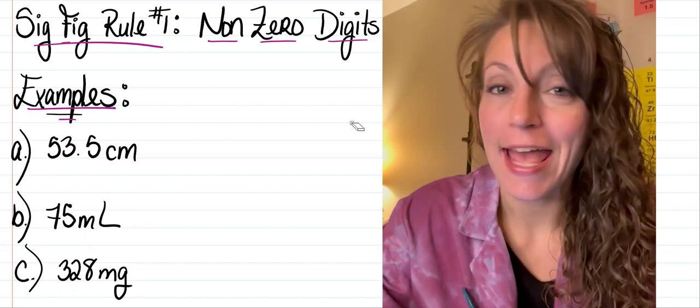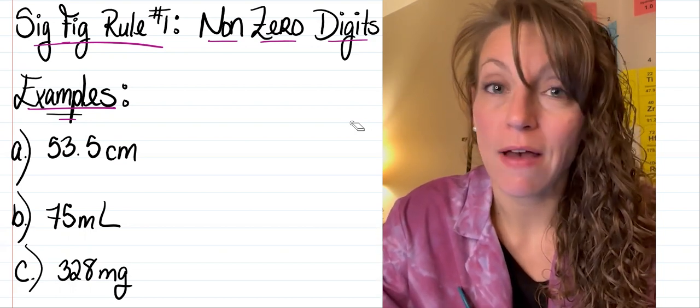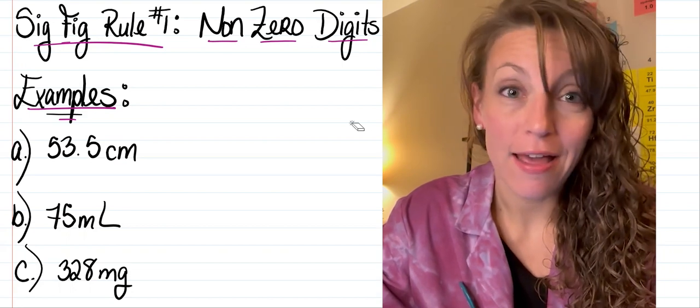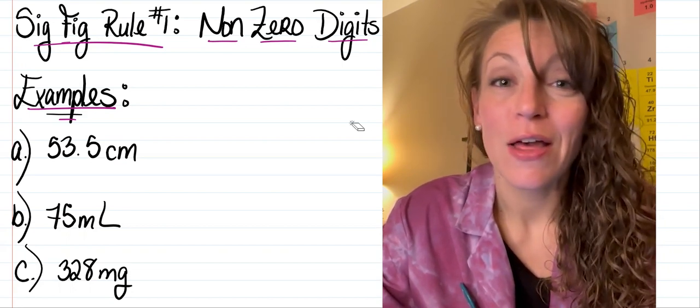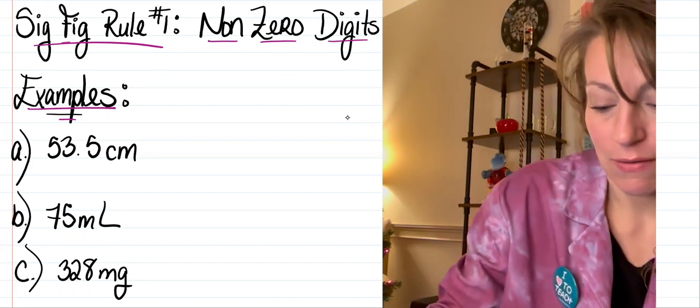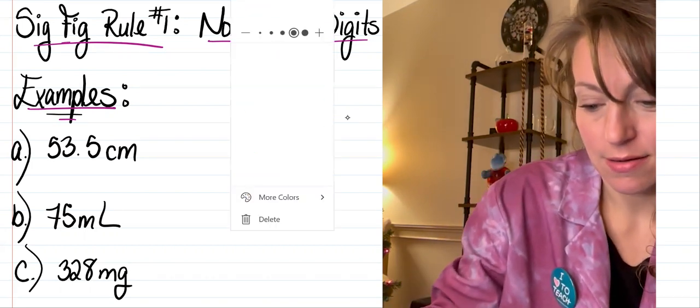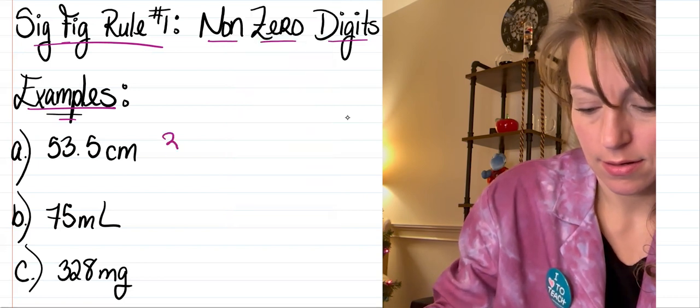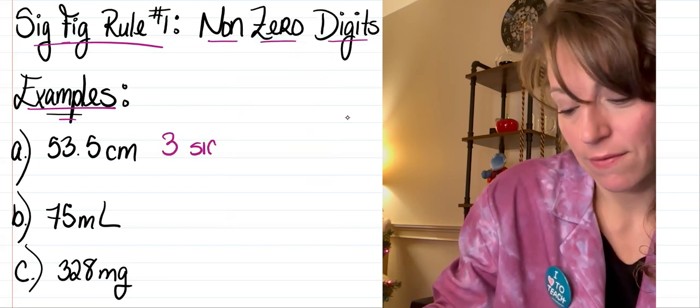For example, in letter A, I have 53.5 centimeters. Since 5, 3, and 5 are not zero, they're all significant. So I have a total of three sig figs here.